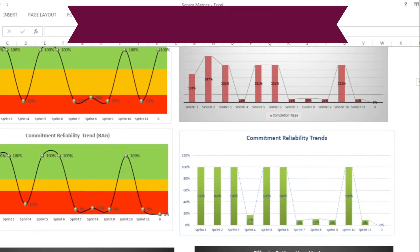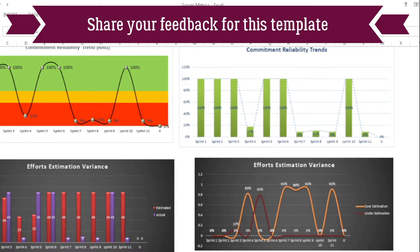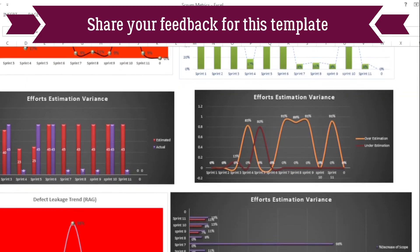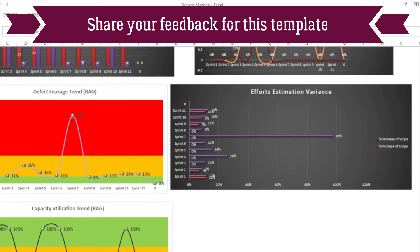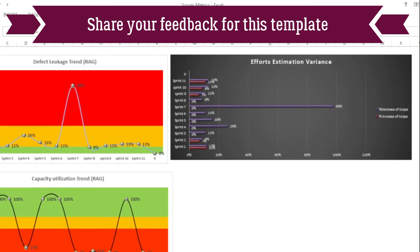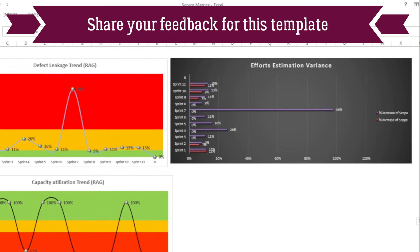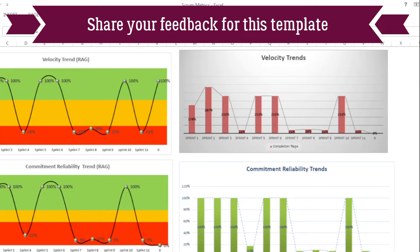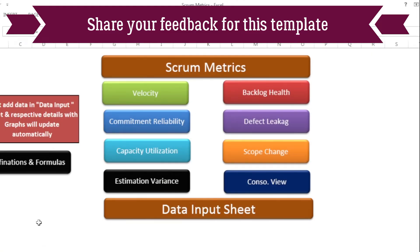When you click on the consolidated view button, you will see all the scrum metric graphs in one sheet, which includes your velocity trend, sprint velocity, commitment reliability, effort estimation, defect leakage, effort estimation variance, and capacity utilization trend as well. This sheet will help you take a consolidated view of all these scrum metrics. Now let's go back to the main sheet.